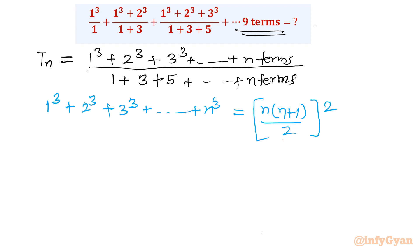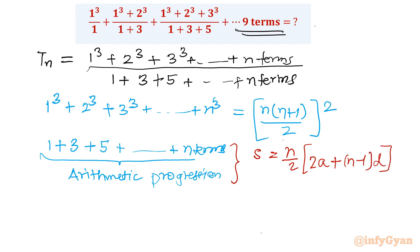Now come to denominator. Denominator is 1 plus 3 plus 5 up to n terms. So here this sequence is AP, arithmetic progression. So how we use to solve this problem or find the sum using formula. We know that sum for any particular AP is n by 2, 2 times first term 2A plus n minus 1 into common difference D. This is a standard result for AP.